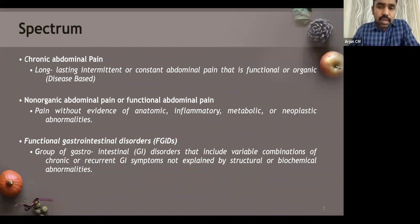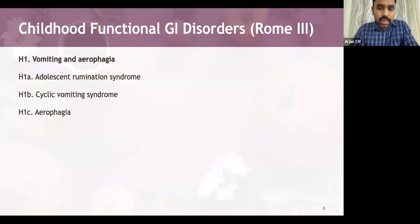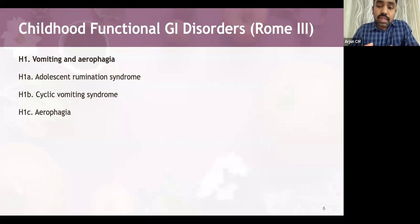According to Rome III criteria, H1 includes mainly vomiting and aerophagia: adolescent rumination syndrome, cyclical vomiting syndrome, and aerophagia. In cyclic vomiting syndrome, there are intense episodic attacks of nausea and vomiting lasting about 1 hour to 10 days, with vomiting at least 4 times per hour. H1 classification is mainly concerned with vomiting.